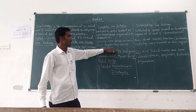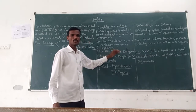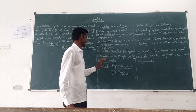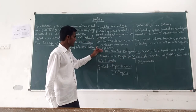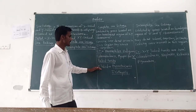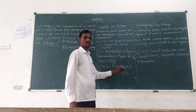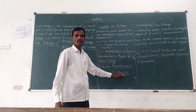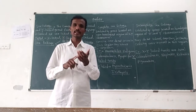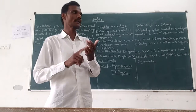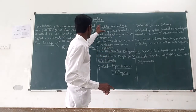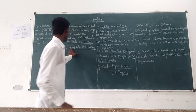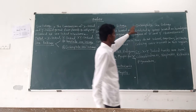X-linked diseases such as hemophilia, red-green color blindness, and myopia are caused by X-linked traits. Y-linked traits such as hypertrichosis and other conditions are common examples of Y-linked traits. This concludes the complete sex-linked type.